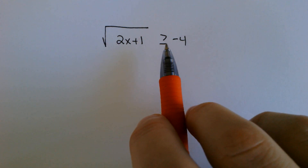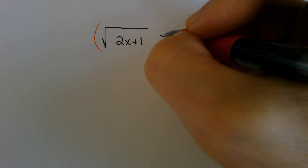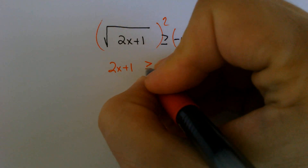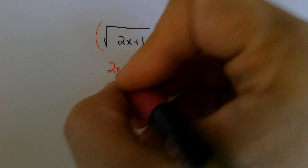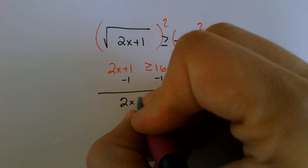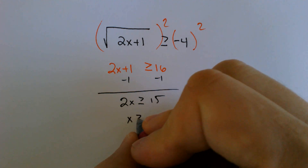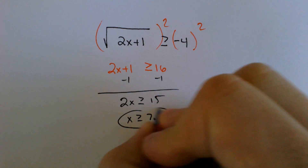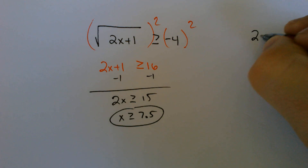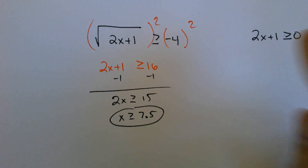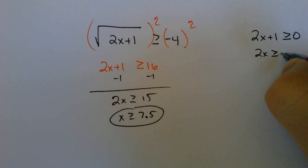Here everything looks the same. You're going to square both sides, and you end up with 2x plus 1 is greater than or equal to 16. You're going to solve that equation — and you'll get upset that I gave you a fraction — because when we subtract 1, we get 2x is greater than or equal to 15, and x is greater than or equal to 7.5 when we divide 15 by 2. Remember, that's half of your answer. You also need to do 2x plus 1 is greater than or equal to 0, and then you would subtract 1 and divide to get negative 1.5.